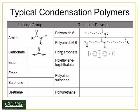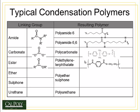Carbonates involve carbon bonded to three oxygen atoms, including a double bond to one of the oxygen atoms. A good example is polycarbonate, where you can see oxygen bonded to carbon, double bonded to oxygen, and that carbon is bonded to another oxygen atom.